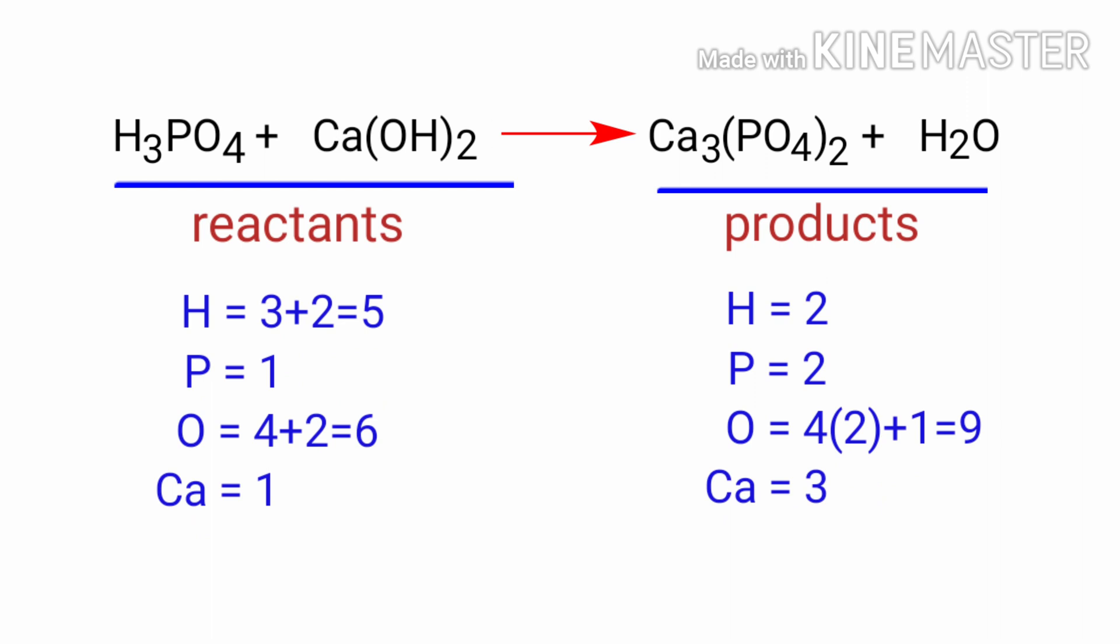If you look at this equation, the equation is not balanced. In the reactants side there are 5 hydrogen atoms, 1 phosphorus atom, 6 oxygen atoms and 1 calcium atom present.